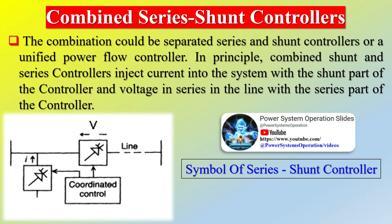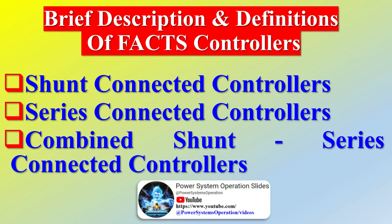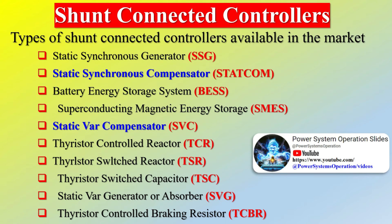Additional benefits include damping of oscillations which can threaten security or limit usable line capacity. Types of shunt-connected controllers available in the market include: static synchronous generator, static synchronous compensator, battery energy storage system, superconducting magnetic energy storage, static VAR compensator, thyristor-controlled reactor, thyristor-switched capacitor, static VAR generator or absorber, thyristor-controlled braking resistor, increased transmission system reliability and availability, lower vulnerability to load changes and line faults, and increased dynamic and transient grid stability.